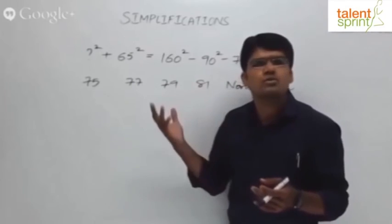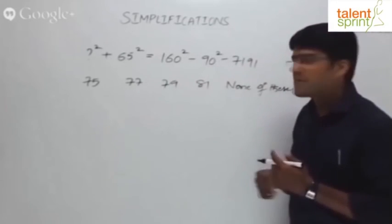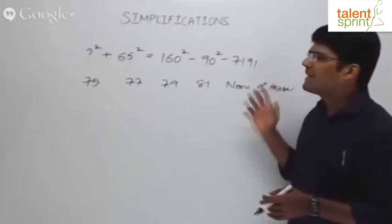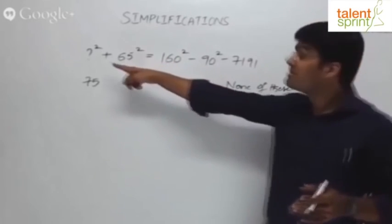How much is 65 squared? 4,225. 160 squared would be 6,40,000, right? Then 90 squared will be 8,100, then 7191. So you can do that simplification part and then take the square root because this is question mark squared.